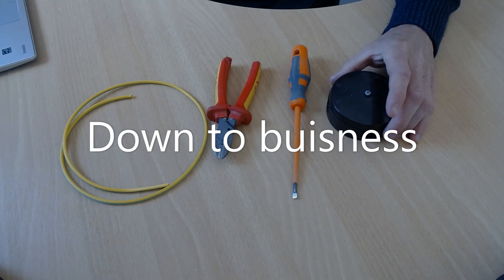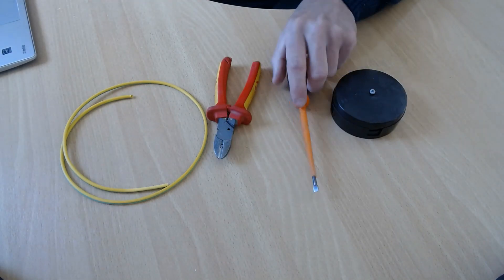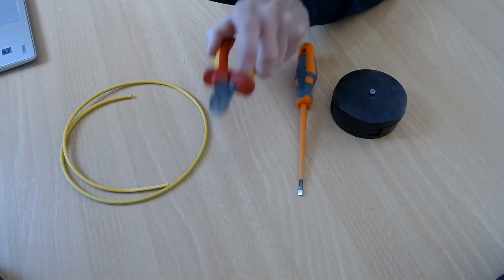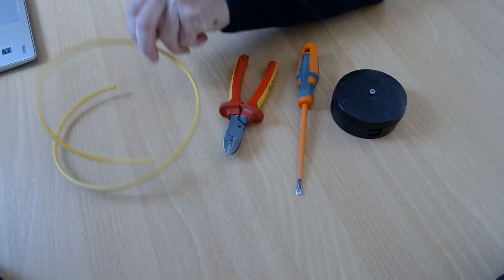So hi, this is what you need: a 30 amp junction box, a screwdriver, a pair of cutters, and some earth sleeving.